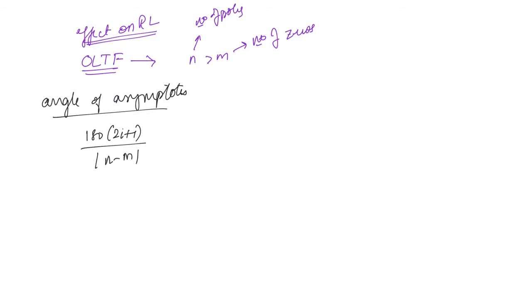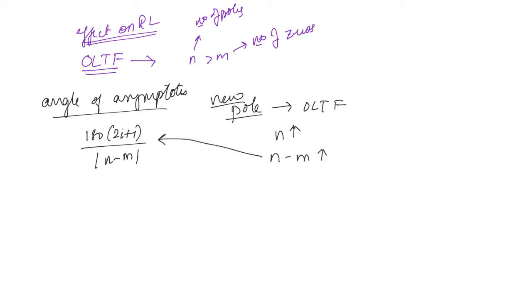When a new pole is added to the open loop transfer function, n will increase, and n minus m will also increase. Since n is already greater than m, increasing n will increase the difference n minus m. That means mod of (n minus m) will increase. When mod of (n minus m) increases, the entire angle will decrease — meaning the angle of asymptote is decreasing.